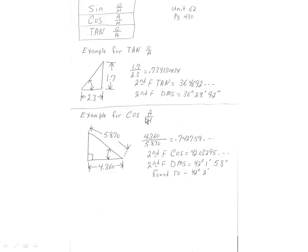For the cosine example — cosine is the adjacent over the hypotenuse. The adjacent side is 4.360 and the hypotenuse is 5.870. So take the adjacent side, 4.360, divided by 5.870, equals this number. Second function cosine equals 42.03295. Then second function DMS gives 42 degrees, 1 minute, 58 seconds — round that off to 42 degrees, 2 minutes.